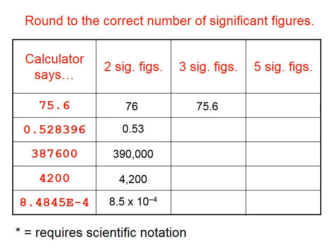But suppose we need to report 75.6 to five significant figures. How would we do that? We would add a couple of zeros on the right end.